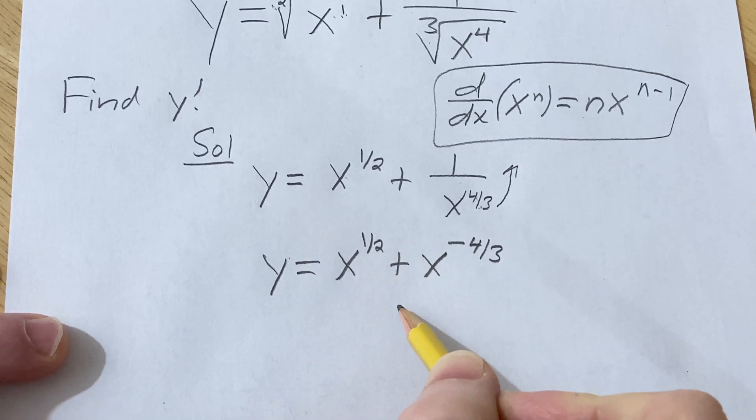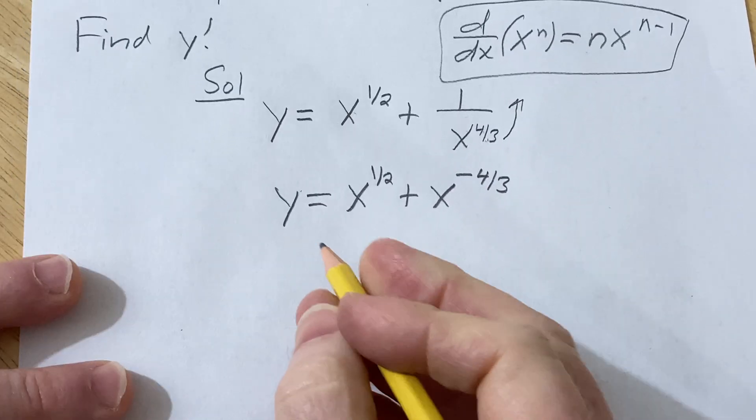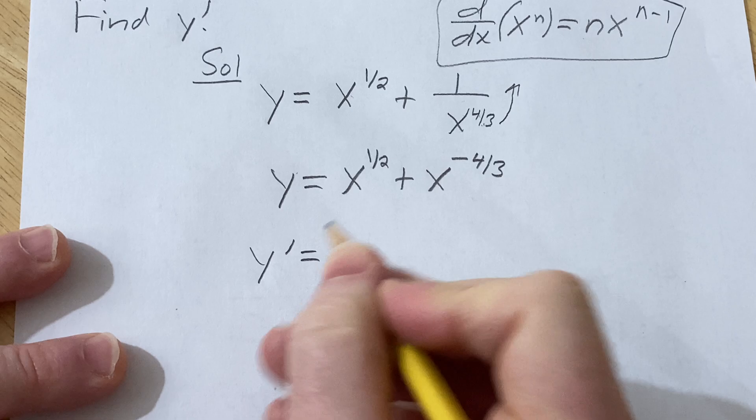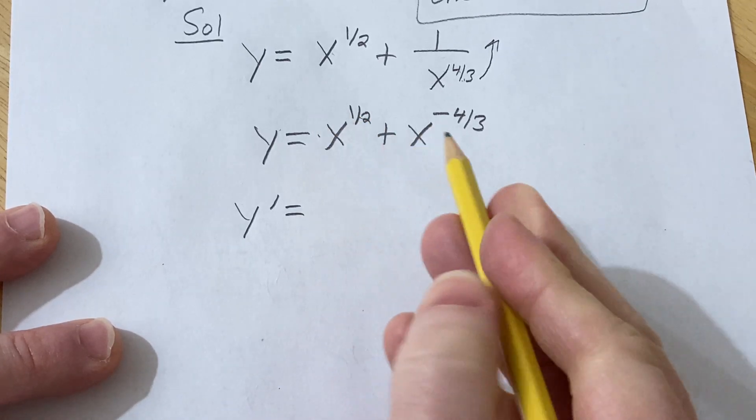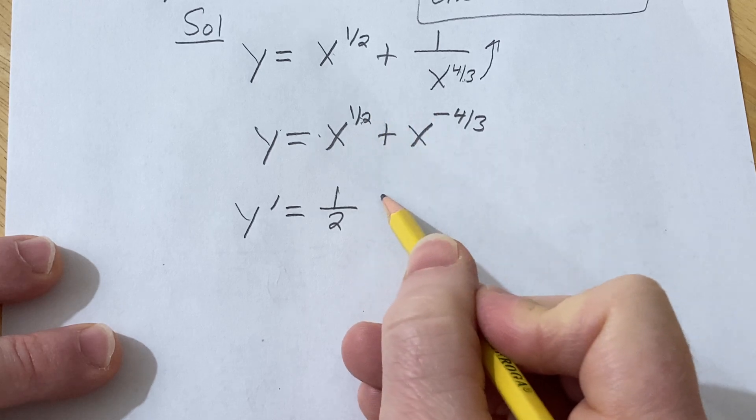So now we're in a good place, right? Because we have x to a power, so we can apply this rule called the power rule. So y prime. So you just bring down the one half, so one half. Then one half minus one is negative one half.